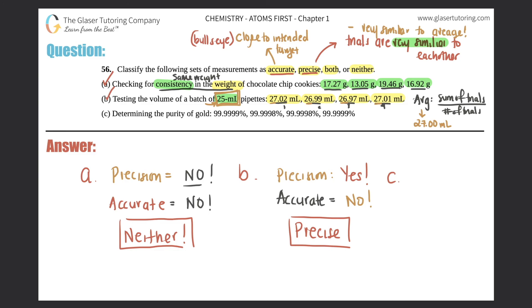Determining the purity of gold. So now we have four samples: 99.9999%, 99.999999%, 99.9999%, 99.999999%. Okay, precision. What do you think? Are they very similar to each other or very far apart? All four of these trials, one, two, three, four, they're super similar to each other. So yes for precision.